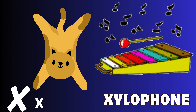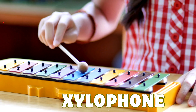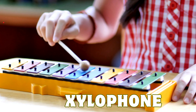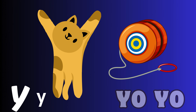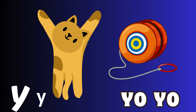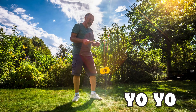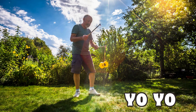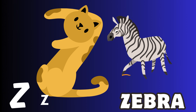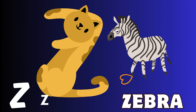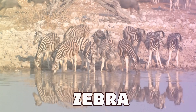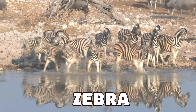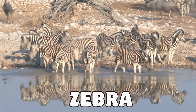X is for Xara. X, Xara. X, Xara. X, Xara. Y is for Jojo. J, Jojo. J, Jojo. Y, Jojo. Z is for Zebra. Z, Zebra. Z, Zebra. Z, Zebra.